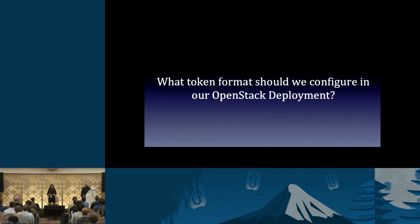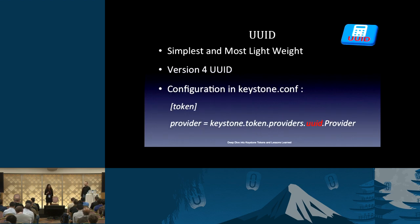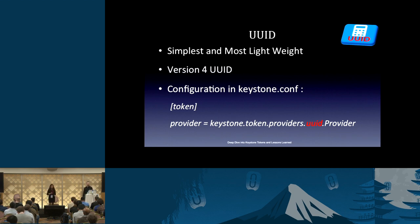We are here to find out what is the best token format that we can configure in our OpenStack deployments. We have four token formats so far, starting with the oldest: UUID. UUID is the simplest token format we have, and it's based on the version four UUID. It's very simple to configure — just specify the provider name and that's it.